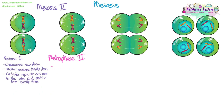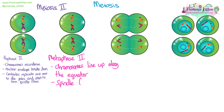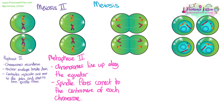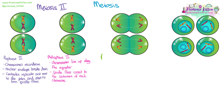Metaphase two: the 23 chromosomes line up along the equator. The spindle fibres produced by the centrioles move out and connect to the centromere of each chromosome.